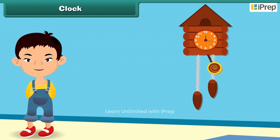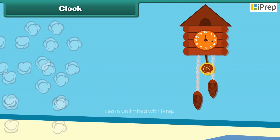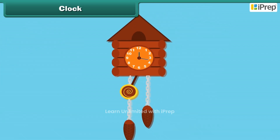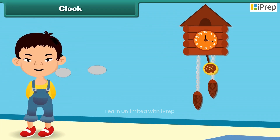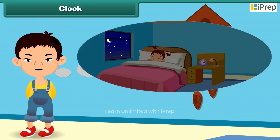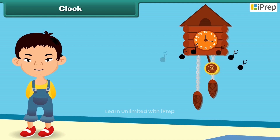As the nursery rhyme says: Tick-tock goes the clock hanging on the wall. Tick-tock goes the clock telling the time to all. Tick-tock goes the clock, it's time for you to go to bed. Tick-tock, tick-tock, tick-tock sounds the clock.